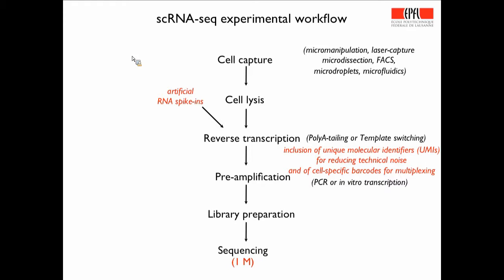There are many different techniques nowadays — from micromanipulation to FACS, micro-droplets, and microfluidics — to capture cells. During reverse transcription, you can use artificial RNA spike-ins to better control noise in your data. You can also include unique molecular identifiers (UMIs) for reducing technical noise, and cell-specific barcodes that allow multiplexing of thousands of cells in one sequencing run. There is some consensus in the field that one million reads may be sufficient to molecularly characterize a cell, though 50,000 may suffice just to identify cell type.